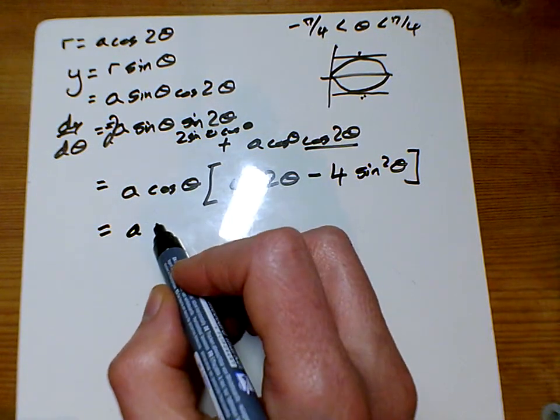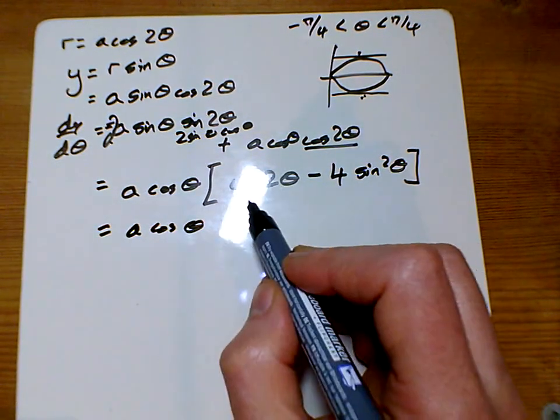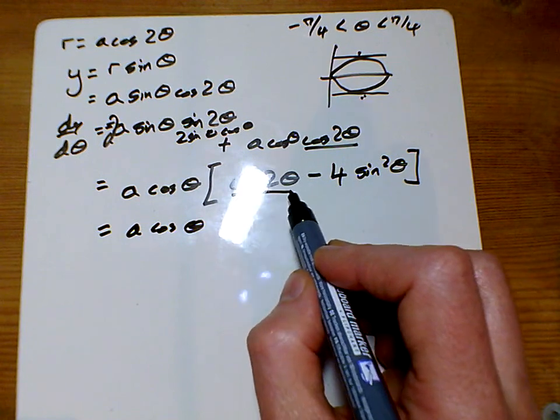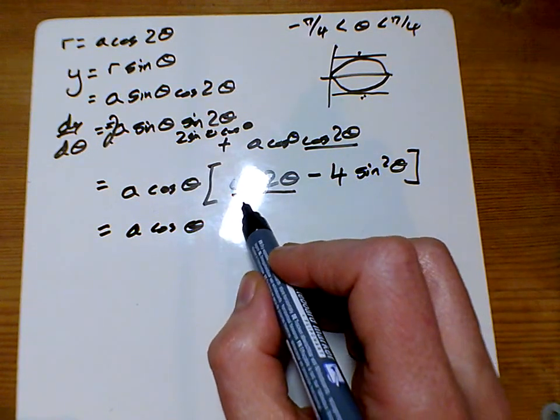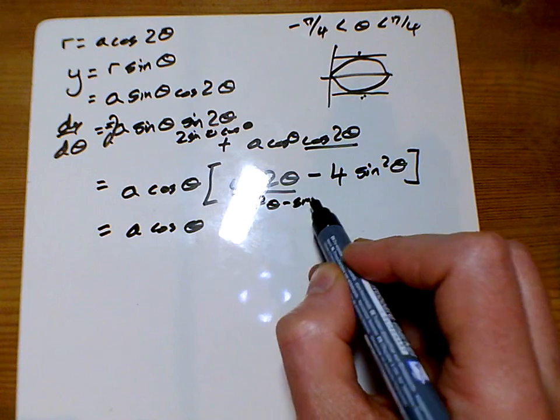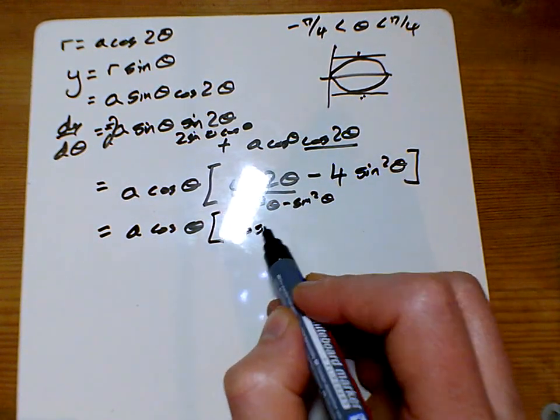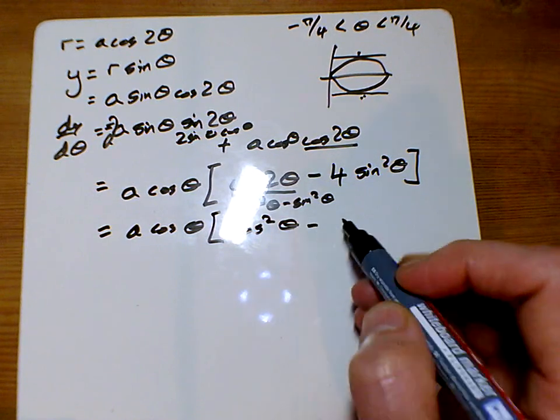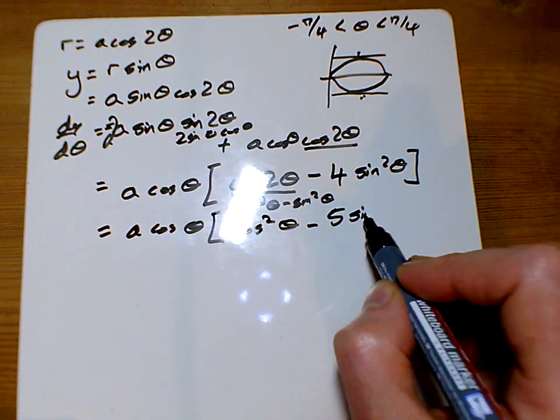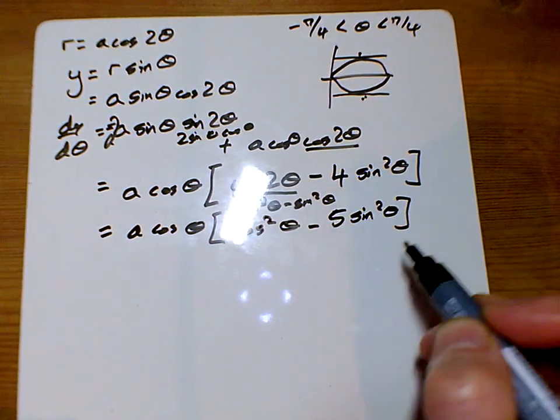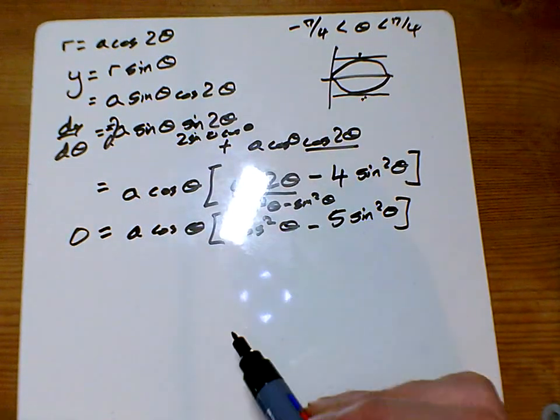Let's go another line again. Let's change this cos 2θ. Cos 2θ is the same as cos² θ minus sin² θ. So this whole big bracket here could be rewritten as cos² θ minus 5 sin² θ. And we want that equal to 0.